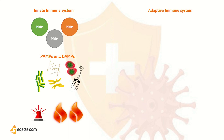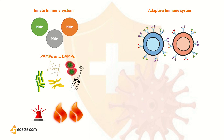In contrast, the adaptive system has thousands of millions of different receptors on its B and T lymphocytes, each one exquisitely sensitive to one individual molecular structure. The responses triggered by these receptors often offer more effective protection against infection, but are usually much slower to develop.